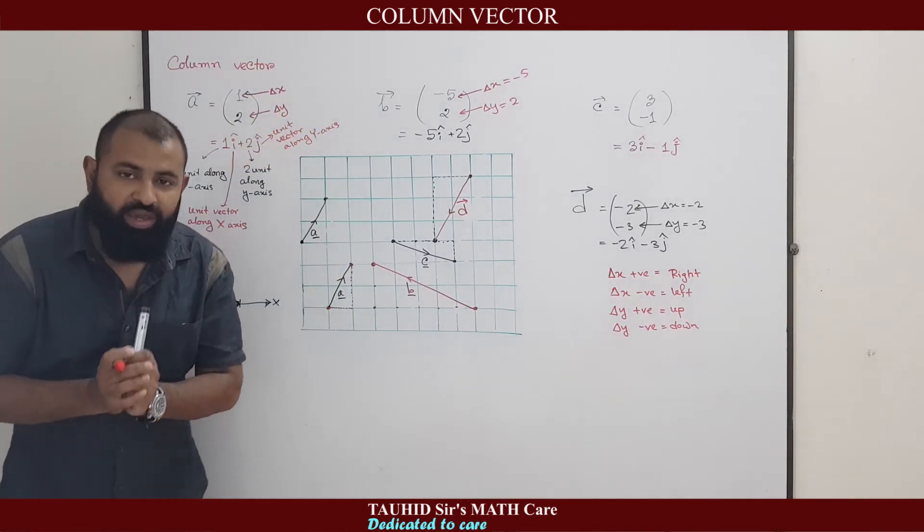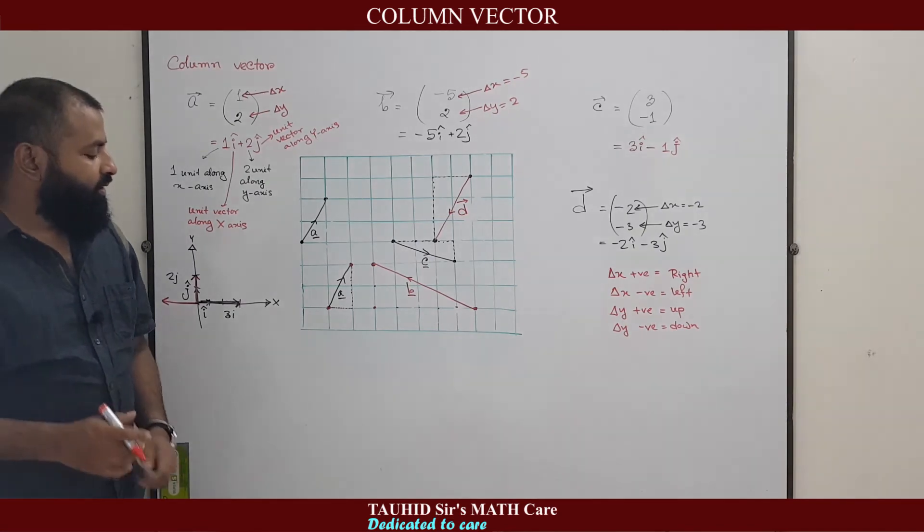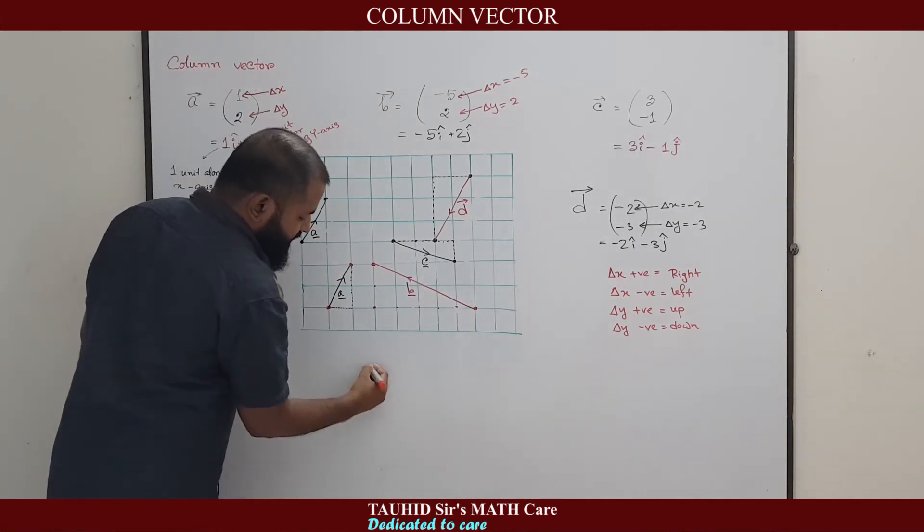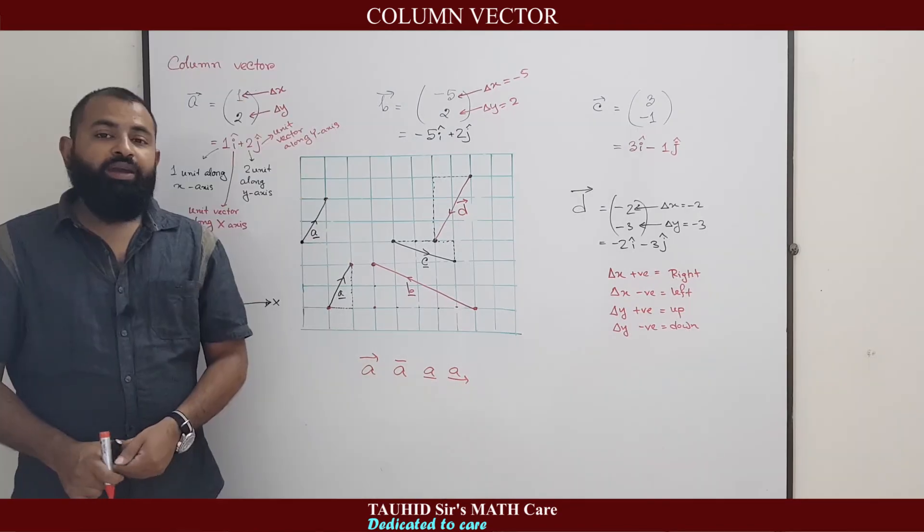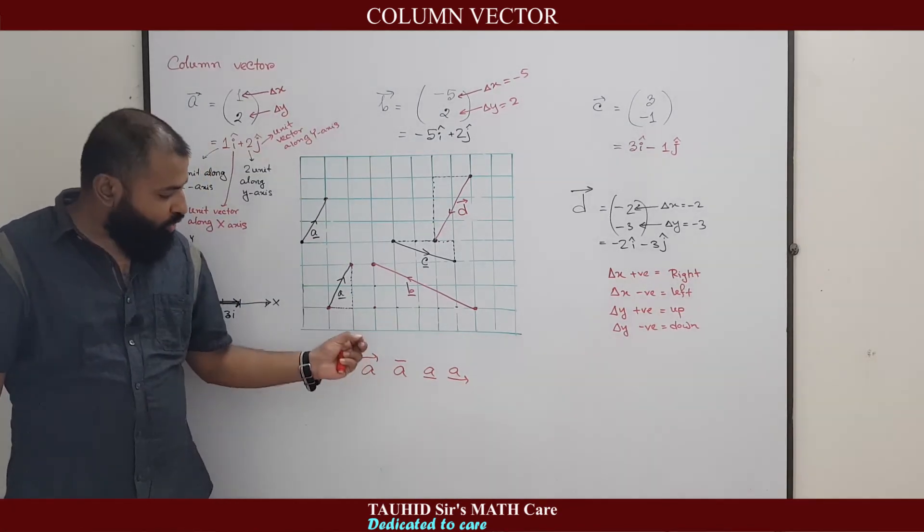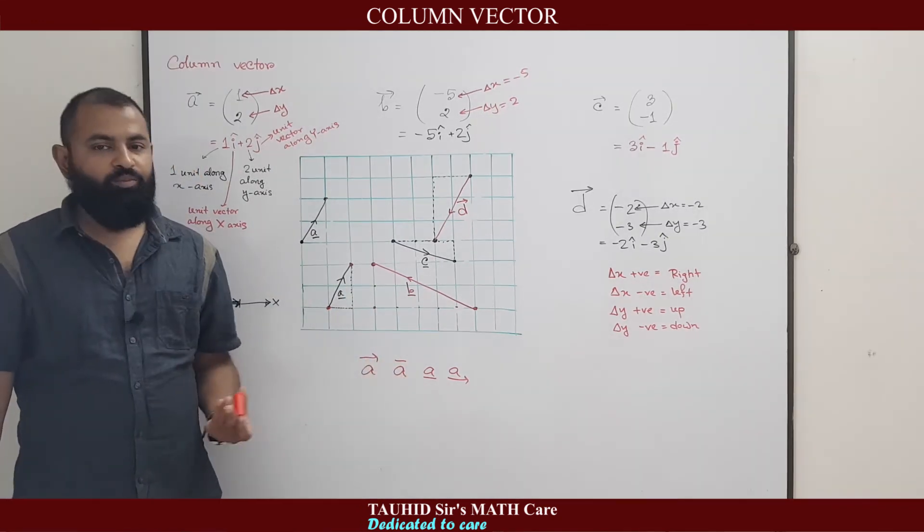While writing any vector, the thing we should keep in mind is that to write a vector, we must use the vector sign. Vector sign can be written as this or this or this. We can draw an arrow above or below the symbol, or we can simply put a bar sign above or below the symbol.